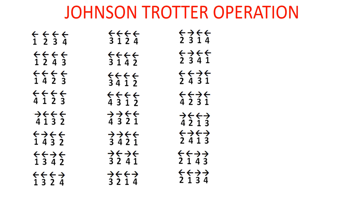The Johnson-Trotter operation is simple. To recap the three steps: Step 1 — identify the largest mobile component. Step 2 — exchange this mobile component with the digit adjacent to it which it is pointing to. Step 3 — reverse the arrows of all the digits which are bigger than this mobile component.